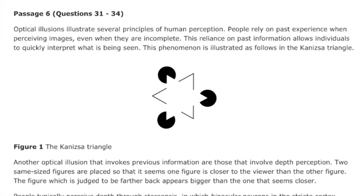Optical illusions illustrate several principles of human perception. People rely on past experience when perceiving images, even when they are incomplete. This reliance on past information allows individuals to quickly interpret what is being seen. This phenomenon is illustrated in the Kanizsa Triangle in Figure 1. You can see some incomplete lines, but it looks like there are two triangles overlaid on top of each other — one completely white with no outline, and the other with a black outline, plus some circles around them. It looks like there's a 3D element even though it's all on a 2D screen.